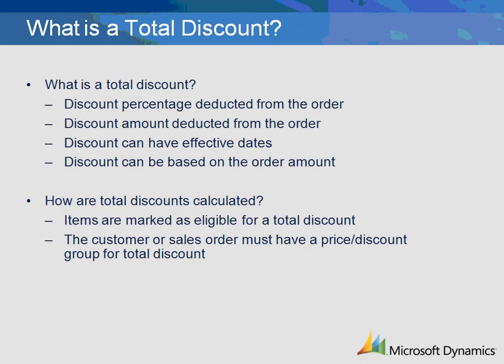Total discounts are a percentage or an amount deducted from the order. Effective dates and minimum order amounts can be created in the trade agreements. Total discounts are only calculated on the items that are eligible for total discounts. Each item is flagged on the item master, indicating if the item is to be included. Some items, such as service or other non-inventory items, are often excluded from total discounts.